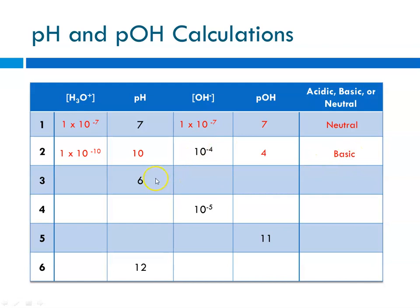Question 3: pH equals 6. The hydronium ion concentration is 10 to the minus 6, which is 10 to the minus pH. If the pH is 6, then the pOH is 14 minus 6, which is 8. That means the hydroxide ion concentration is 10 to the minus 8, which is 10 to the minus pOH. If pH is 6, it's less than 7 — it's acidic.